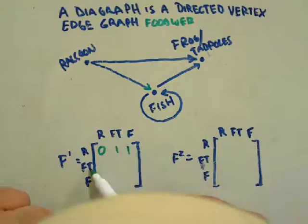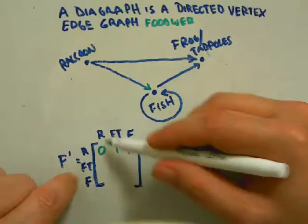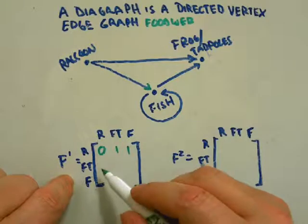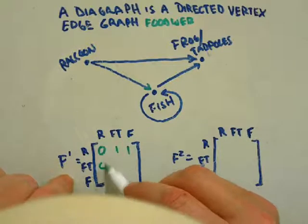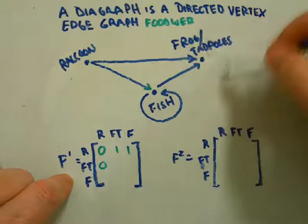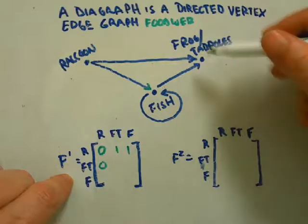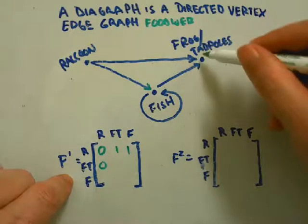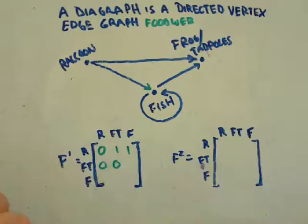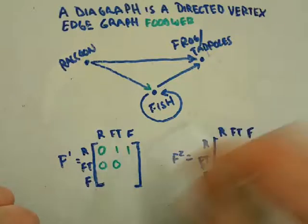Frogs and tadpoles - do they eat raccoons? No, so that's a zero. Do frogs and tadpoles eat frogs and tadpoles? No, because there would be a looping arrow. Since they didn't put an arrow here, that's a zero. Do frogs and tadpoles eat fish? No, the arrow doesn't go toward the fish, so that's zero.